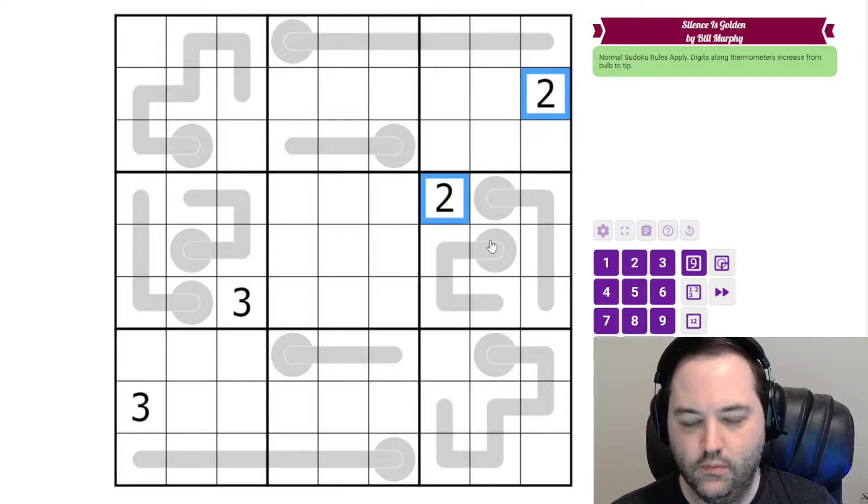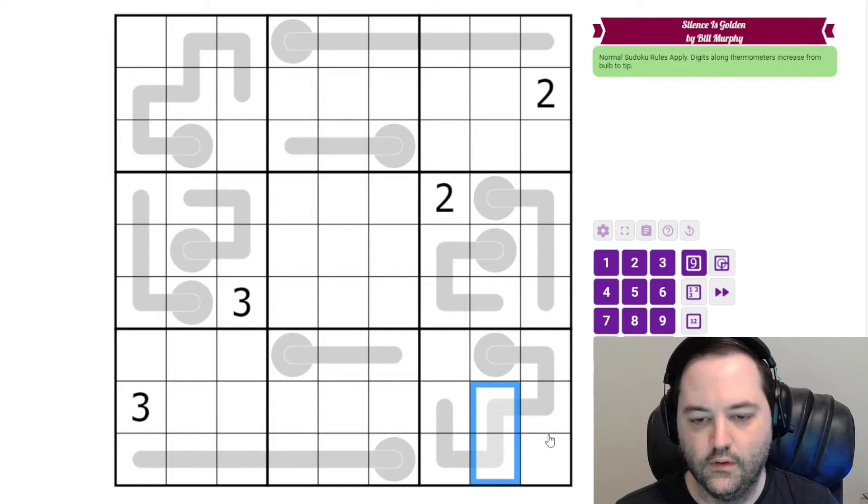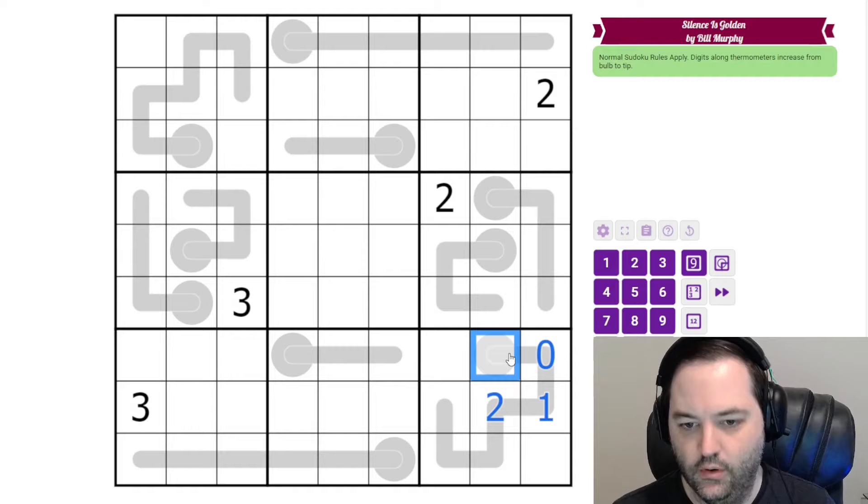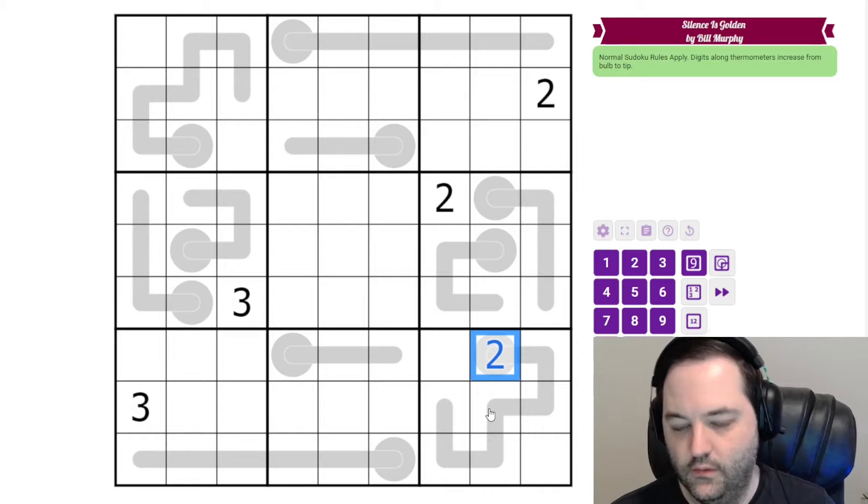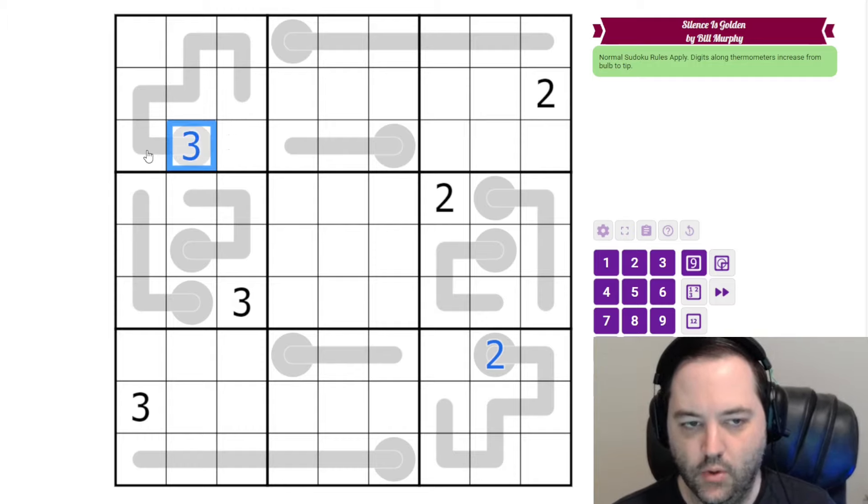So where we're going to start is with our given digits, and let's look at the twos first. Two in this box can't go in any of these cells. Now, can we put two in either of these cells on the thermo? No. If we put a two here, then we have to go down going toward the bulb. So that would be one, zero, negative one. That obviously doesn't work. The only place two can go is in the bulb.